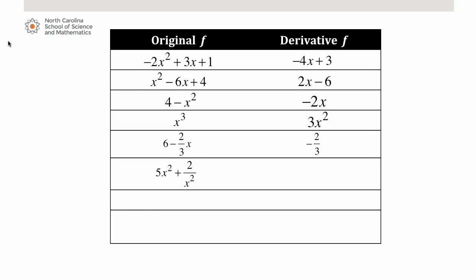The original function 5x squared plus 2 over x squared has a derivative of 10x minus 4 over x cubed. The function 3x cubed minus 9x has a derivative of 9x squared minus 9. And finally, 6 minus 7 over x to the fourth has a derivative of 28 over x to the fifth.